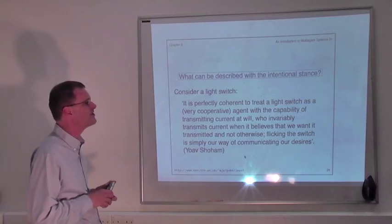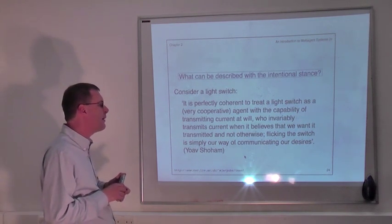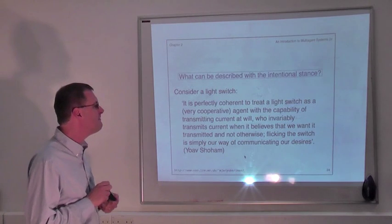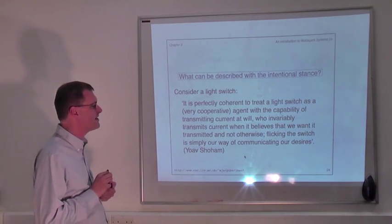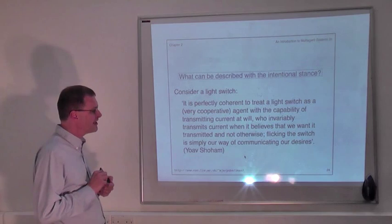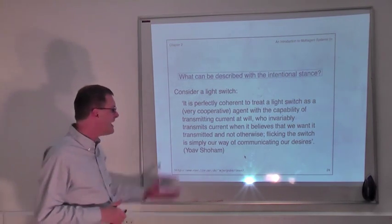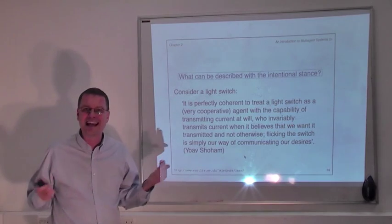It's perfectly coherent to treat a light switch as a very cooperative agent with the capability of transmitting current at will, who invariably transmits current when it believes we want it transmitted and not otherwise. Flicking the switch is simply our way of communicating our desires. So, here, we're talking about a light switch as if it is an agent.